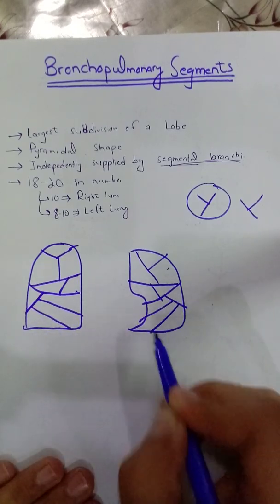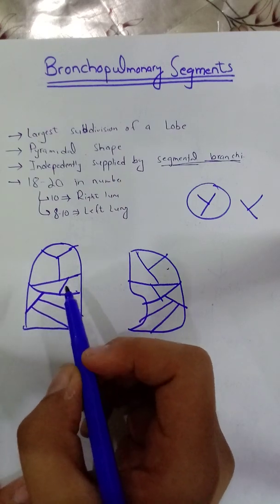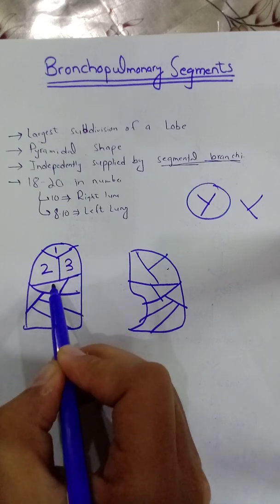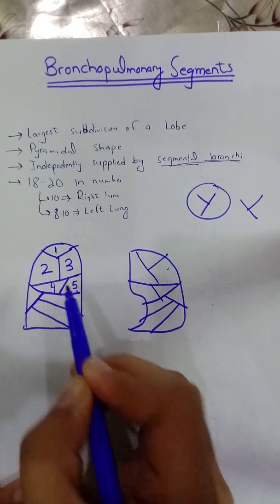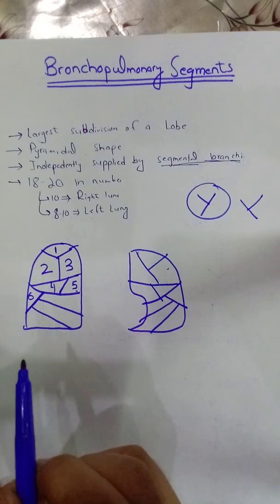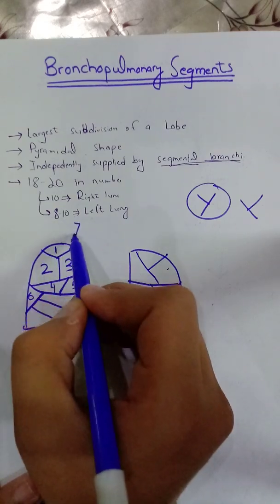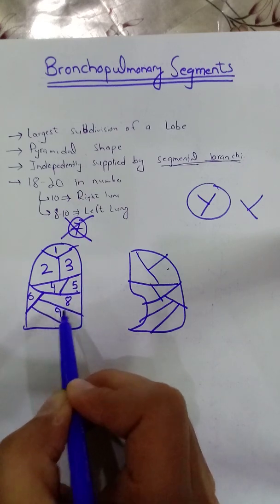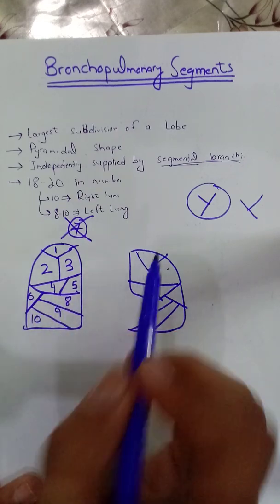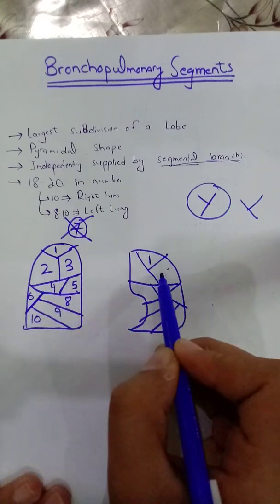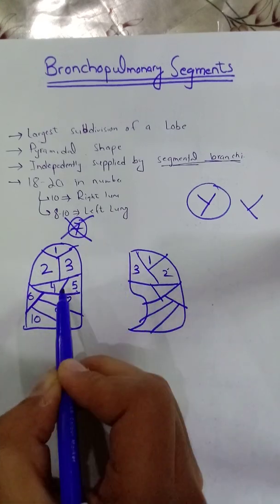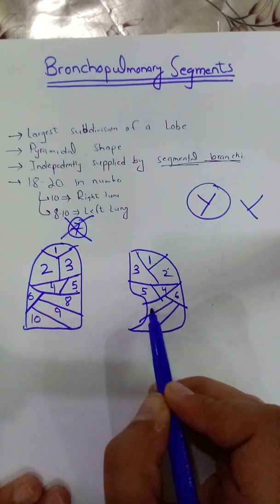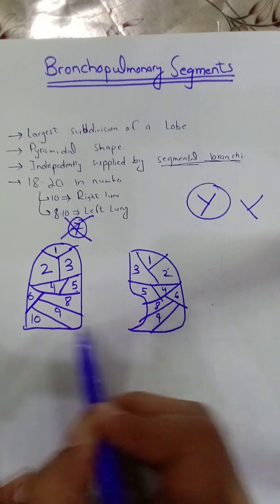Now we will write the numbers in these lobules. This will be 1, 2, 3, 4, 5, 6. Remember one thing, we will not write 7. Six, 8, 9, and 10. Same numbering here on the left side: 1, 2, 3, 4, 5, 6, 8, 9, and 10.